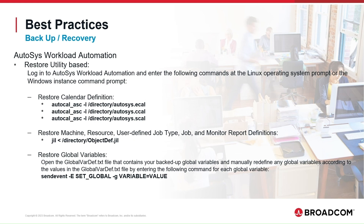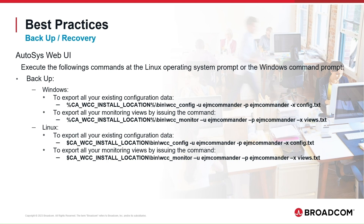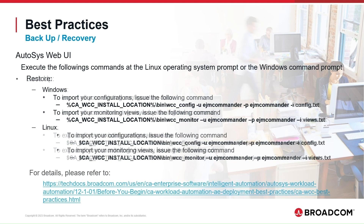To restore your calendar definitions to the database, enter an autocalendar-asc command followed by the -I option, the directory where the backup was created, and the name of the backup file. To restore machine, resource, user-defined job type, job, and monitor report definitions, enter a JIL command followed by the directory and backup file name. To restore global variables, open the backup file and manually redefine any global variables by entering a SendEvent command for each. These are the commands to backup and restore the Autosys Web UI on Windows and Linux environments. For more details, please refer to the Autosys documentation.